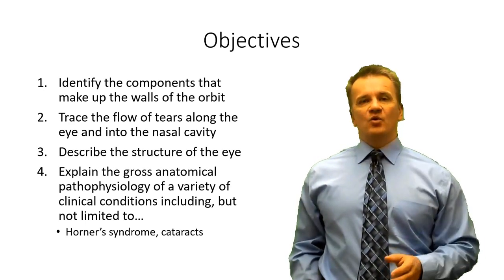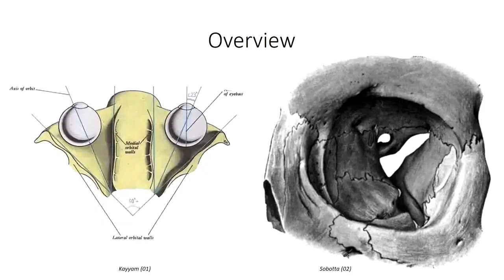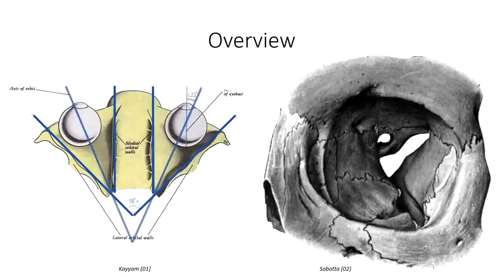We'll also briefly discuss the lacrimal apparatus responsible for the production of tears and how they work to moisten the surface of the eye. The orbit itself is a hollow cavity within the skull found bilaterally, inferior to the anterior cranial fossa and lateral to the nasal cavity. It has a conical shape with the apex directed posteriorly opening into the middle cranial fossa and the base open anteriorly. The medial walls are directed more or less parallel to one another, while the lateral walls diverge at roughly 90 degree angles to each other. In doing the math, we see that the orbital axis, running from the apex to the center of the base, must be at approximately 45 degrees to one another.